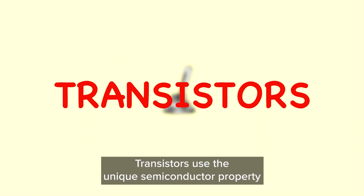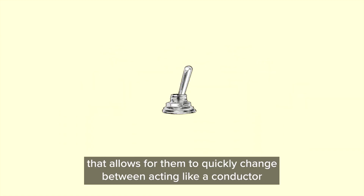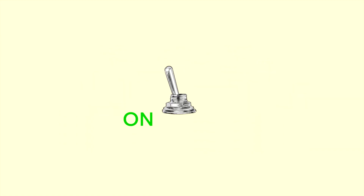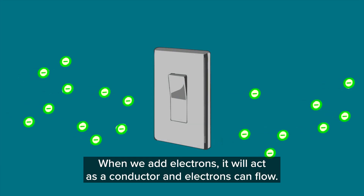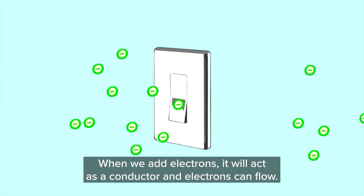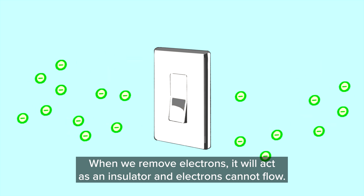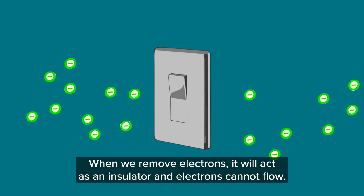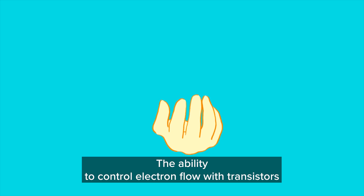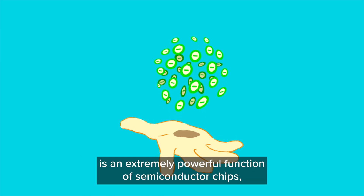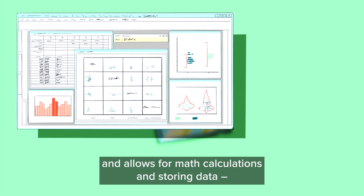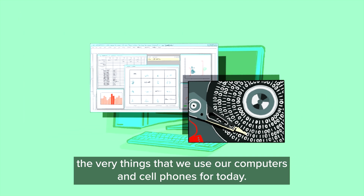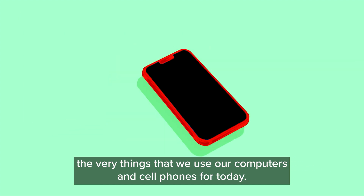Transistors use the unique semiconductor property that allows them to quickly change between acting like a conductor and acting like an insulator. When we add electrons, it will act as a conductor and electrons can flow. When we remove electrons, it will act as an insulator and electrons cannot flow. The ability to control electron flow with transistors is an extremely powerful function of semiconductor chips and allows for math calculations and storing data — the very things that we use our computers and cell phones for today.